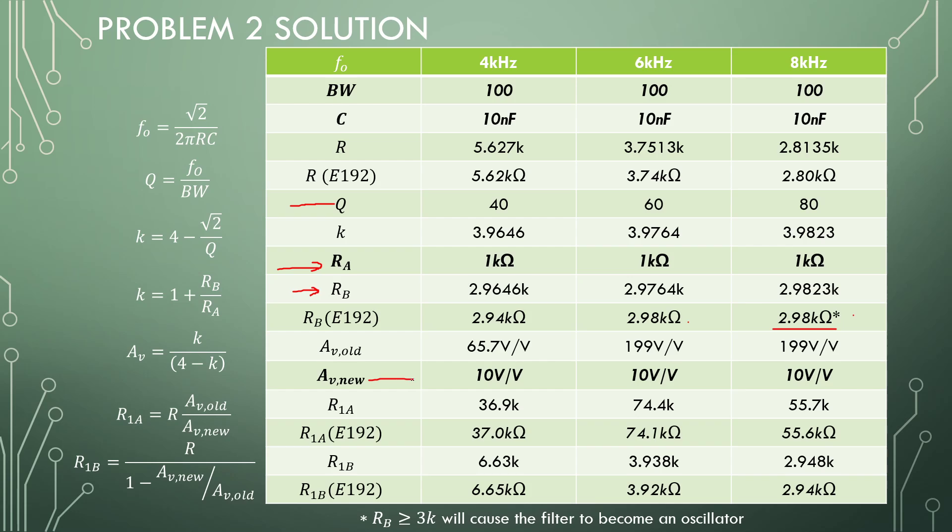So from this, since we have K, we can calculate the gain of each. So 65.7, almost 200 for both of these. And if we want a gain of 20 decibels that's 10 volts per volt, and we can just plug in the old gain and the new gain and the resistor that we got here up top into our equations, or you can do it with a voltage divider if you want to go through a lot of effort. And we get our 1A and 1B values for our resistors. So you can pause this and see if you got the same values, and then I will jump into the simulation.